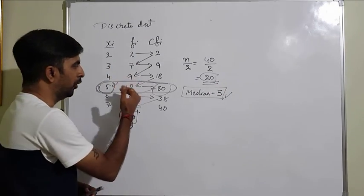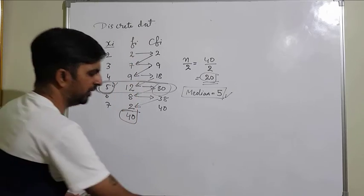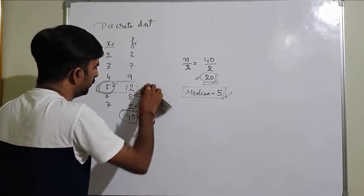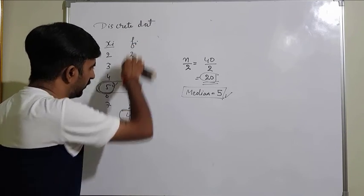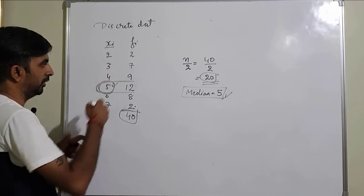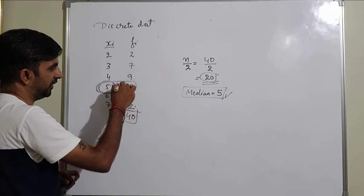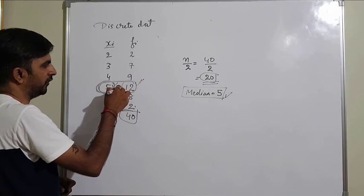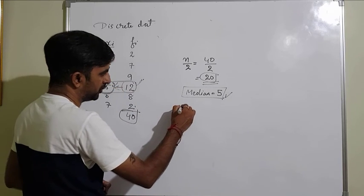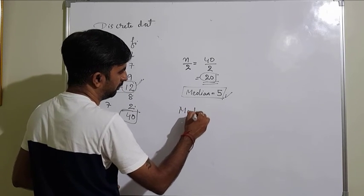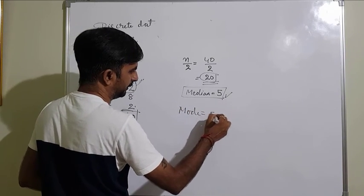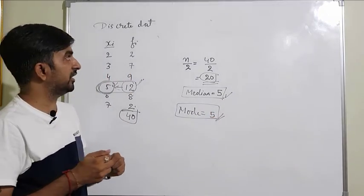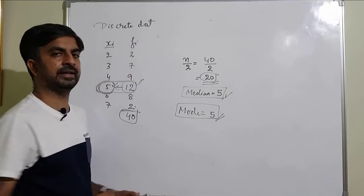For mode in discrete data, you simply find the highest frequency among all observations. The frequency of 5 is 12, which is the highest frequency. So the number in front of this highest frequency is the mode. Therefore, mode is 5.